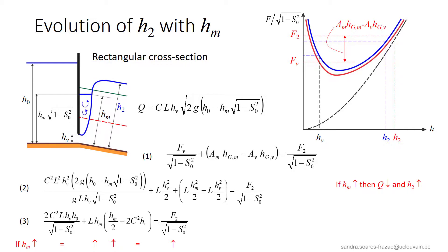Rearranging the terms, equation 2 can be written as in equation 3. From this equation, we can deduce that F2 will increase. Indeed, if HM increases, the first term here remains constant. The second one increases.